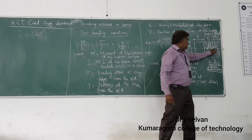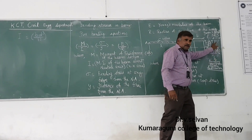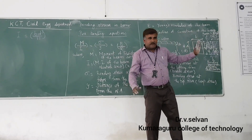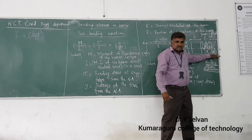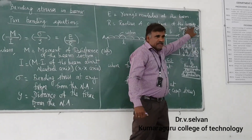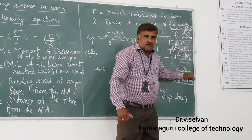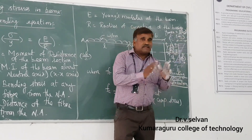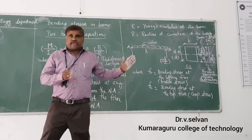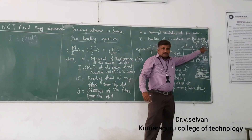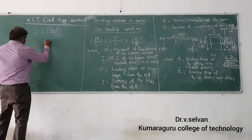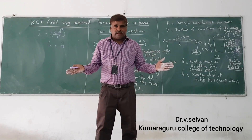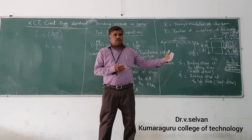There is a linear variation of bending stress across the section, like a triangle. So the maximum bending stress will occur at the top and bottom fibers. Maximum tensile stress is σt and maximum compressive stress is σc. For a symmetrical section, σc equals σt because the neutral axis is at mid-depth. For an asymmetrical section, σc and σt will vary, and you take the maximum value for your design.